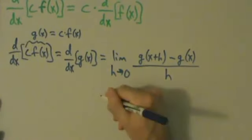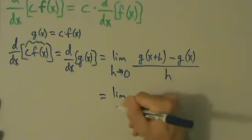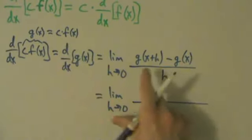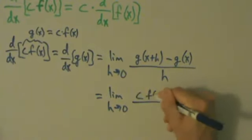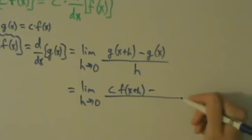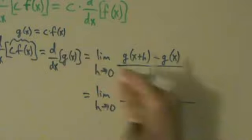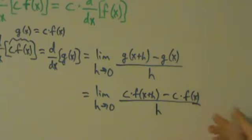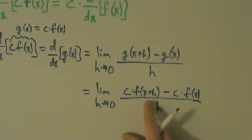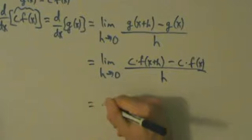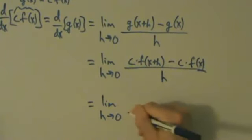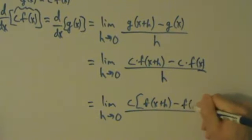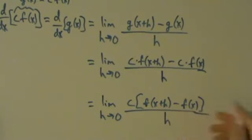But what's g(x)? g(x) is just c times f(x). So now we can substitute back in terms of f(x). If g(x) is c·f(x), then g(x+h) is c·f(x+h). And then minus g(x), which is just c·f(x). So we have that on top, and h is still on the bottom. Notice we have c times something minus c times something else, so we can factor out the c on top. We're going to have f(x+h) minus f(x) left, with h still on the bottom.